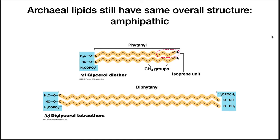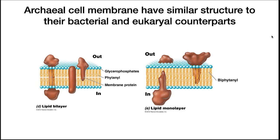This changes the properties of the lipids, making them more stable in high temperatures and acidic environments. If an archaean lives in very hot environments, greater than 85 degrees centigrade, it may even form diglycerol tetraethers. These cross completely through the membrane and are very stable. Archaeal cell membranes have a similar structure to their bacterial and eukaryal counterparts — they look similar, but the alkyl chain goes all the way through, and physiochemically both membranes behave in a similar fashion.